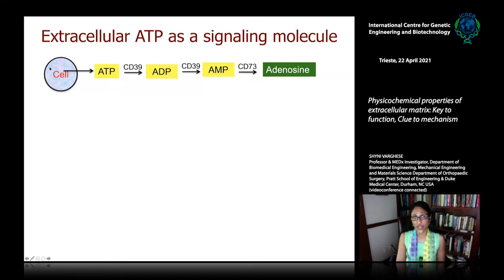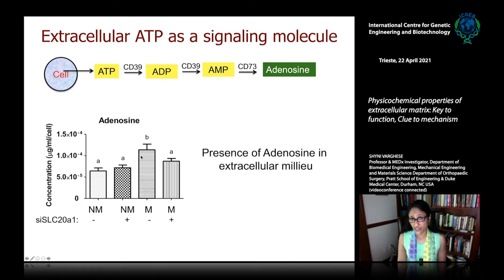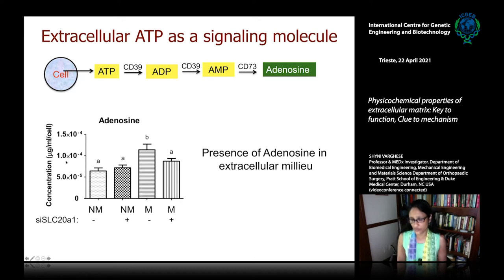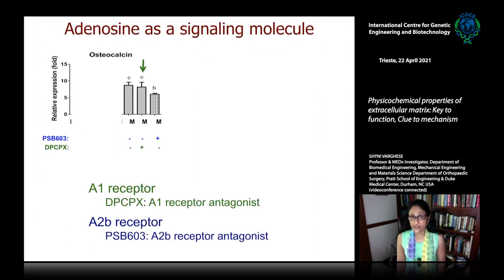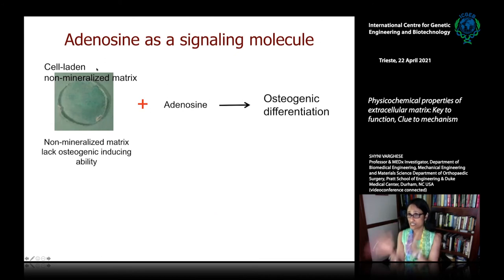The question is: what is happening? Phosphate ions enter the cell, there is a lot of intracellular ATP, which gets secreted extracellularly. This extracellular ATP can be metabolized into adenosine. So we looked at adenosine levels — and on mineralized material there is a higher level of adenosine. When we treat with siRNA, this level goes down. We also detected extracellular adenosine concentration in the medium. We looked at the A1 receptor and A2B receptor: when we perturb the A1 receptor, we don't see any effect. With the A2B receptor, we see a downregulation of osteogenesis — osteocalcin — telling us that adenosine is acting as a signaling molecule through A2B.